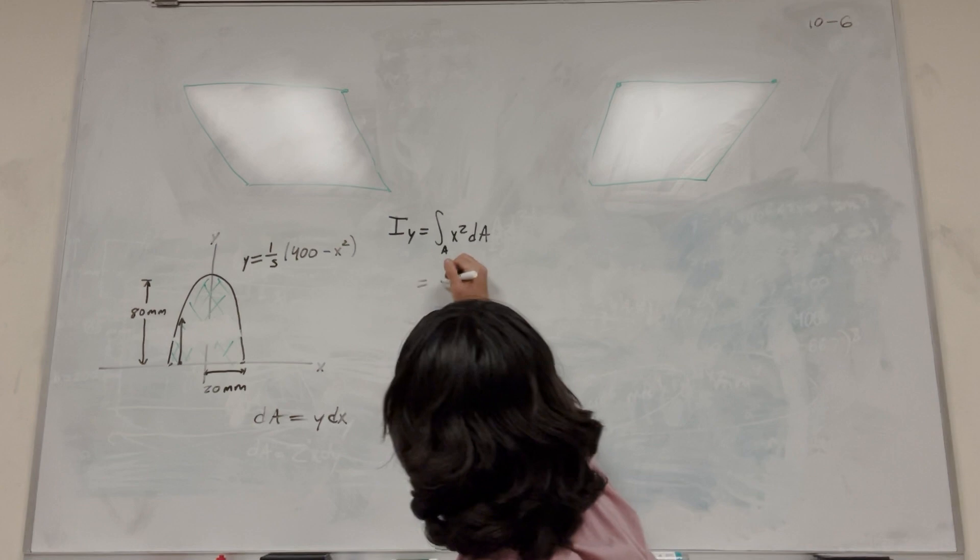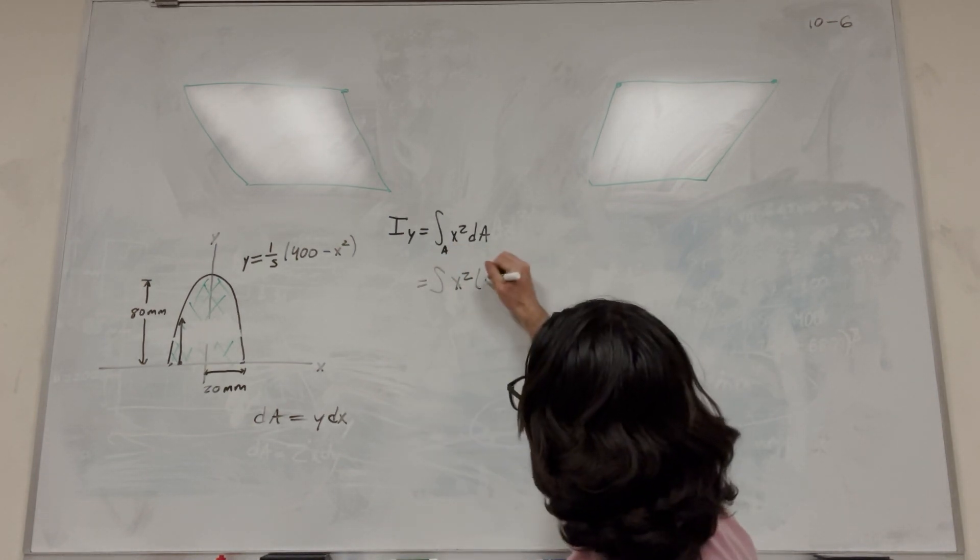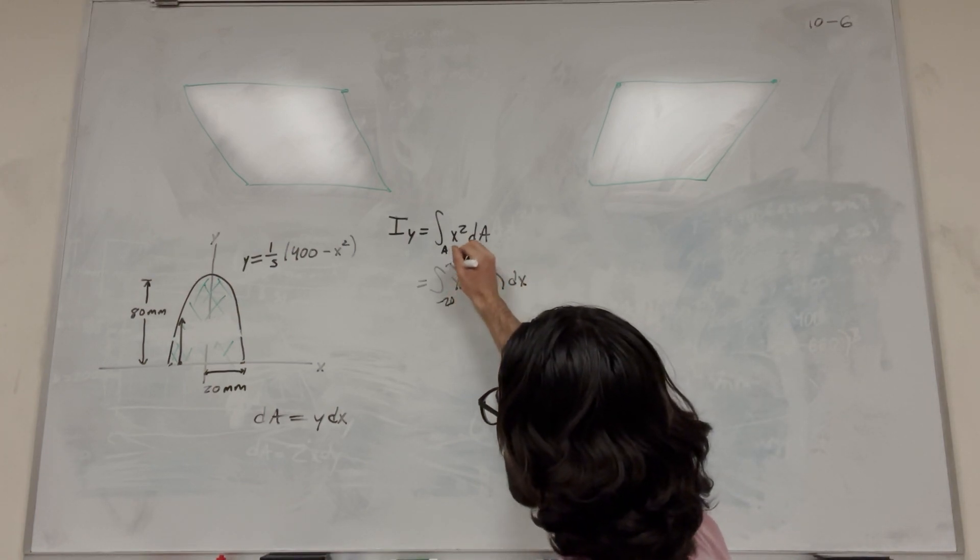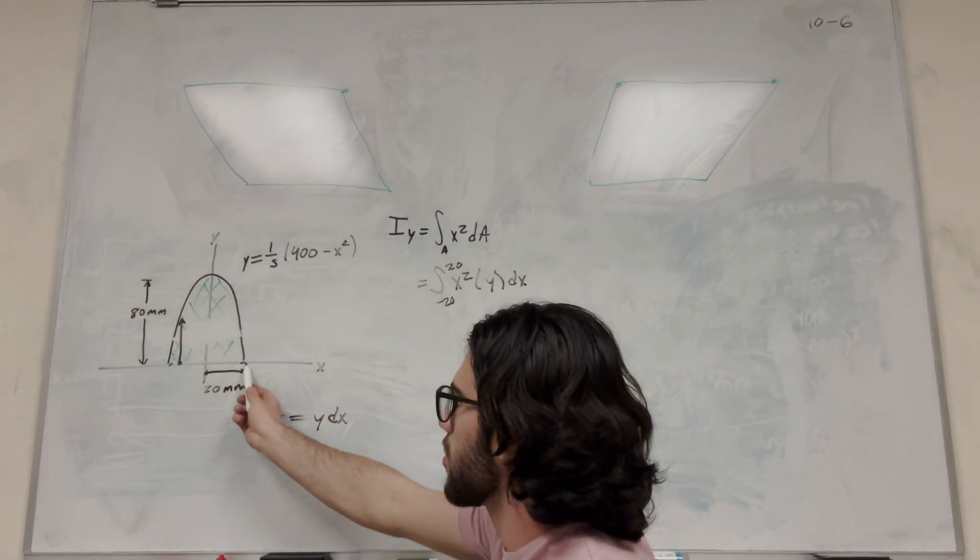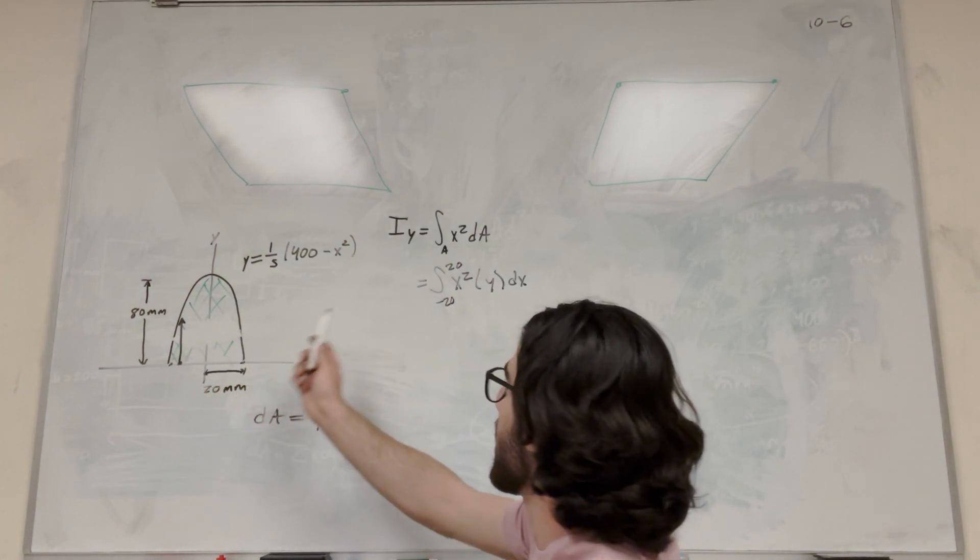So let's re-plug in this equation. So it's going to be x squared, and then dA is going to become y dx. And then dx goes from negative 20 to 20, right? This intercept here is 20, and this intercept is negative 20. So dx is going to go from negative 20 to 20. That's our balance.